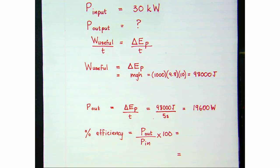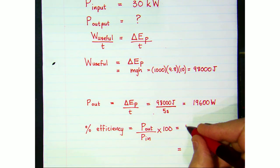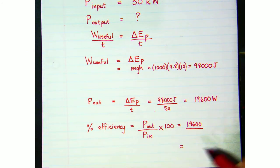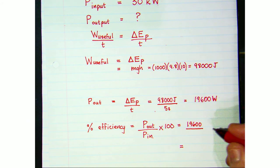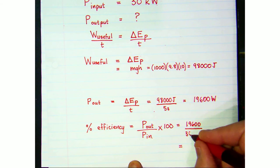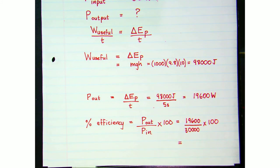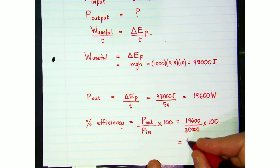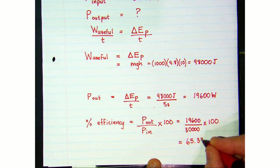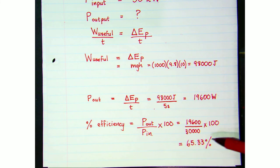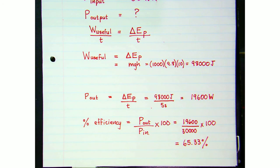One final step: the percentage efficiency of this motor. Output power is 19,600 watts divided by the total input power of 30,000 watts when working at full power, multiplied by 100 — giving an answer of 65.33 percent. It's certainly not 100 percent efficient; it's only 65.3 percent efficient because a lot of energy was being dissipated per second through friction, resulting in a power loss.